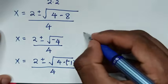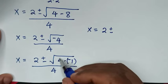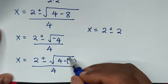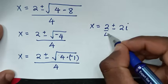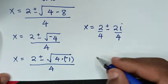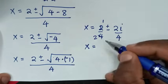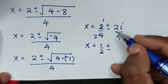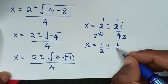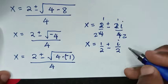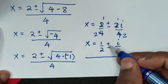So x equals 2 plus or minus the square root of 4 which is 2, times square root of negative 1 which is i, over 4. Dividing through by 4, and simplifying, we get x equals one half plus or minus i over 2. These are two complex solutions because of the plus and minus.